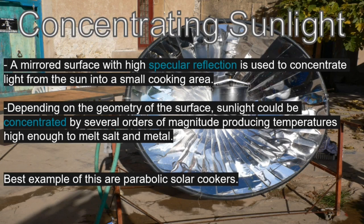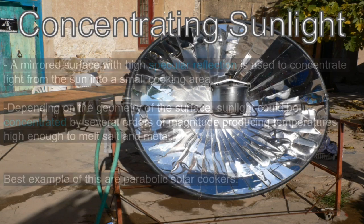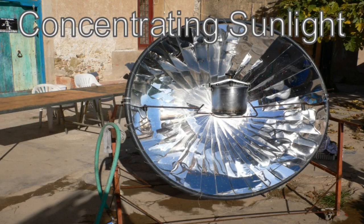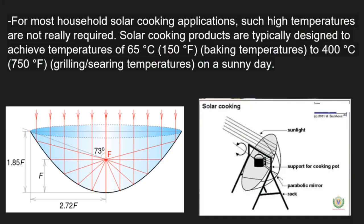Talking about concentrating sunlight: a mirror surface is used to concentrate the light from the sun to a small cooking area. The best example of such a mechanism is a parabolic solar cooker. In its working principle, parallel rays of light enter and hit the parabolic surface, and these rays are then concentrated on the cooking vessel, which is kept at the focus of the parabolic surface.